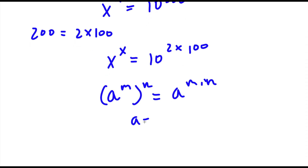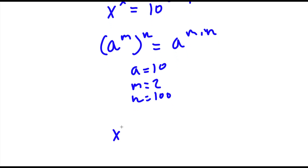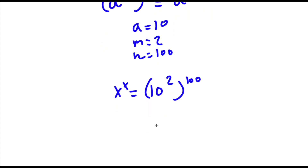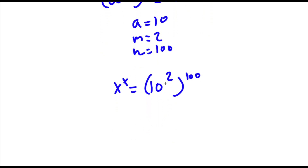So in this case a is equal to 10, m is equal to 2, and n is equal to 100. So this gives us x to the power of x is equal to 10 to the power of 2 to the power of 100. We can simplify the parentheses: 10 to the power of 2 is simply 10 times 10 which is 100. So now I have x to the power of x is equal to 100 to the power of 100.